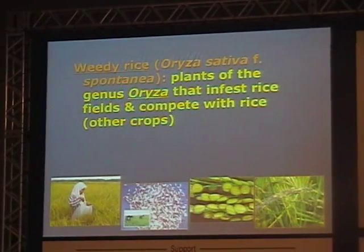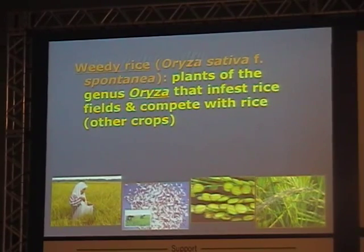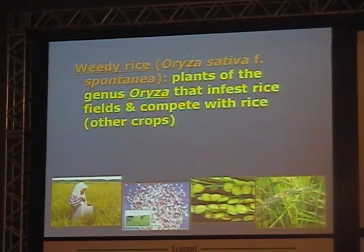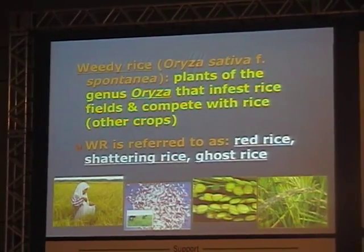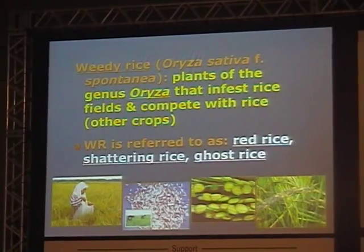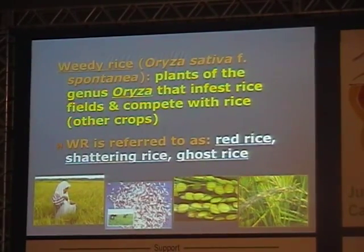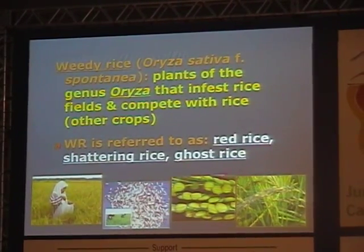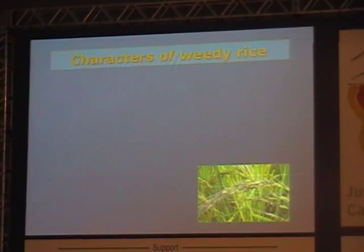Weedy rice is defined as plants in the genus Oryza that infest rice fields and compete with rice crops. If you're not familiar with 'weedy rice,' in the US they call it red rice, and in some places shattered rice. In Southeast Asia they call it ghost rice — because once it gets into the rice field, you can never get rid of it.